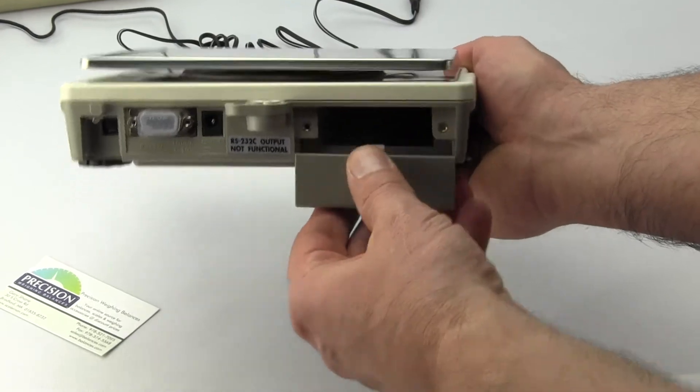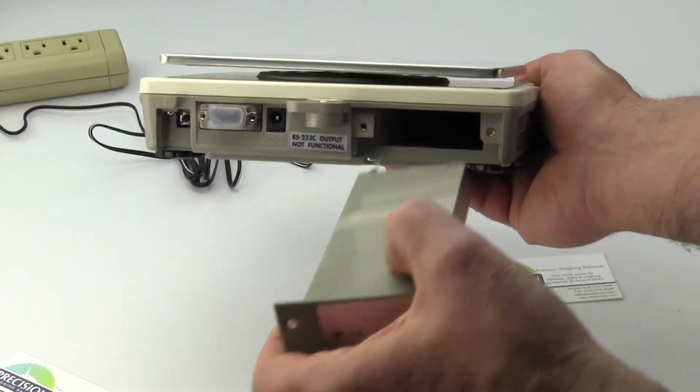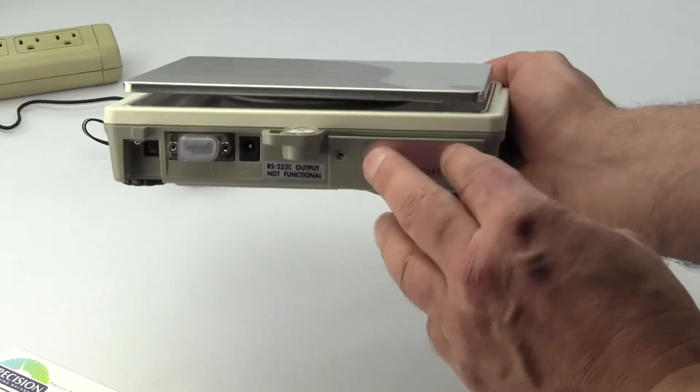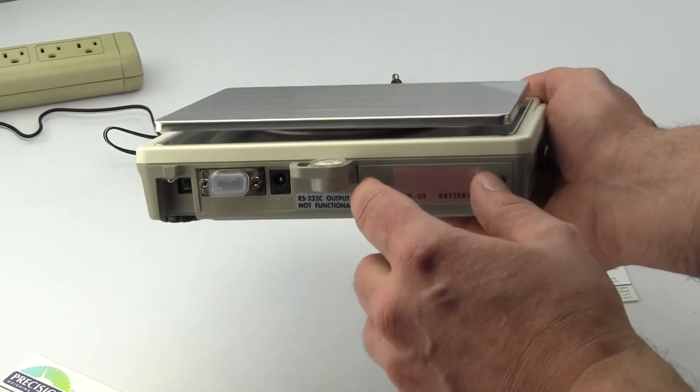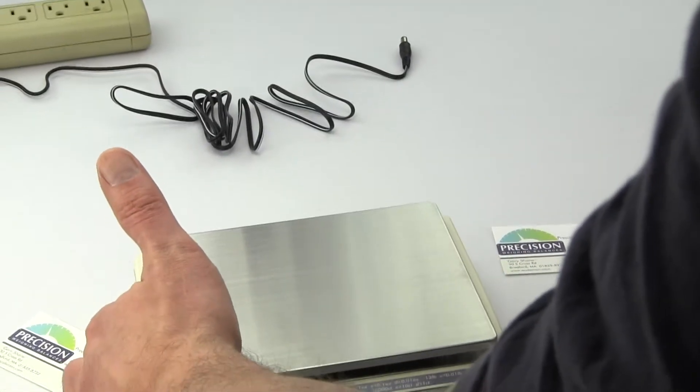You'll notice there's a cover here. This cover gets removed and this is the rechargeable battery. One simply slides it in. There's two little screws here that you'd screw in afterwards. I'm just trying to show you exactly that the scale does operate if you want to buy that rechargeable battery.